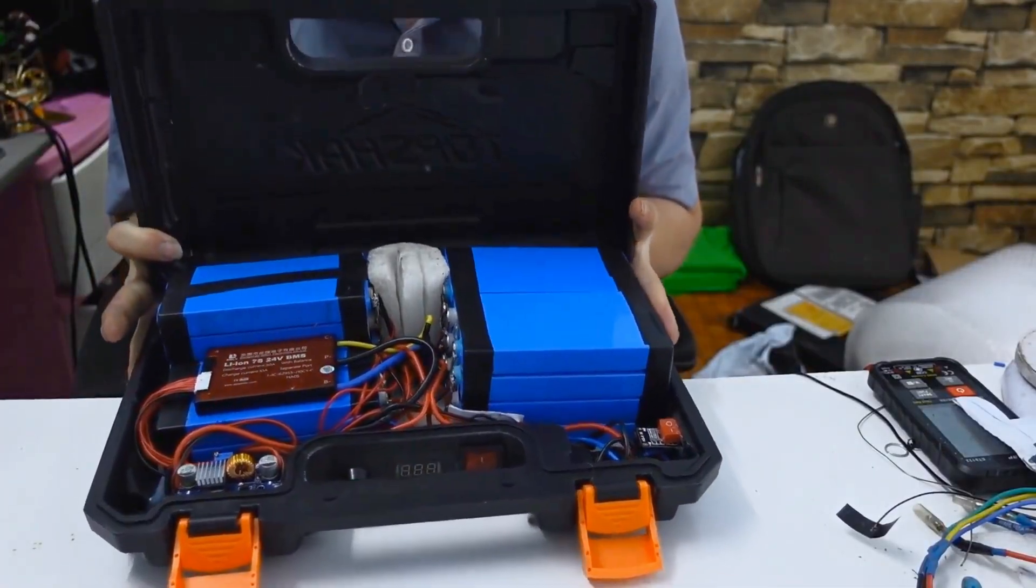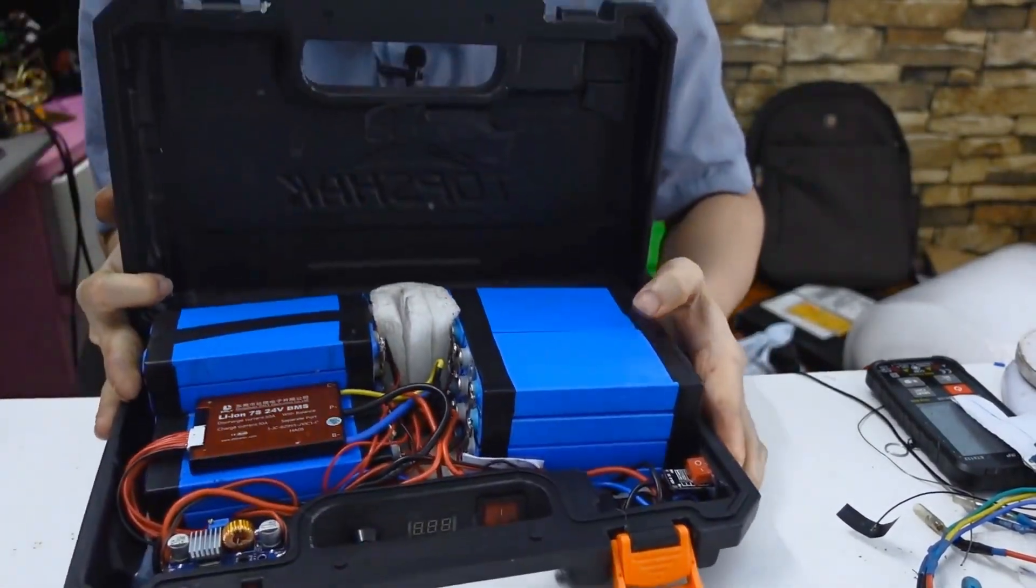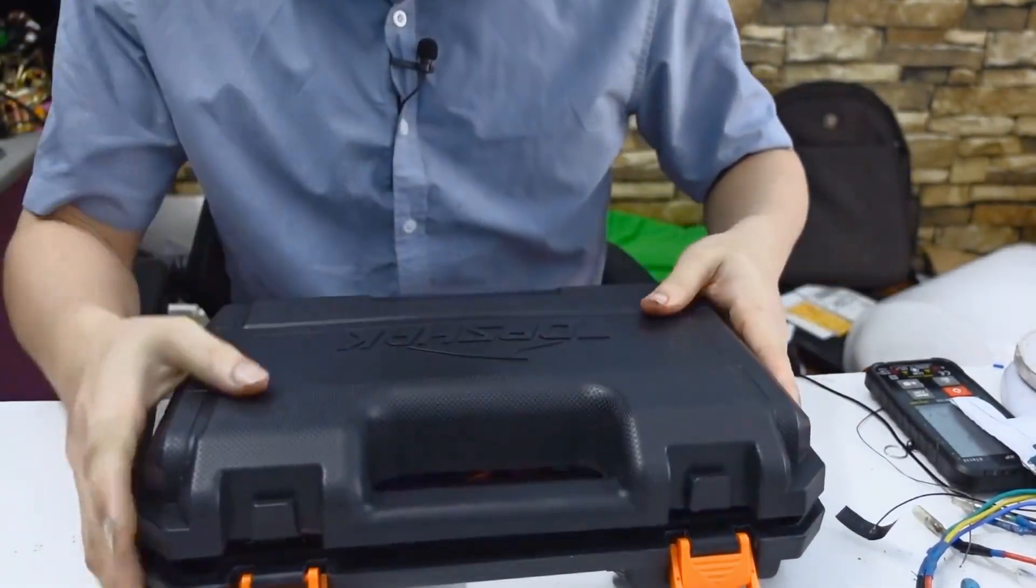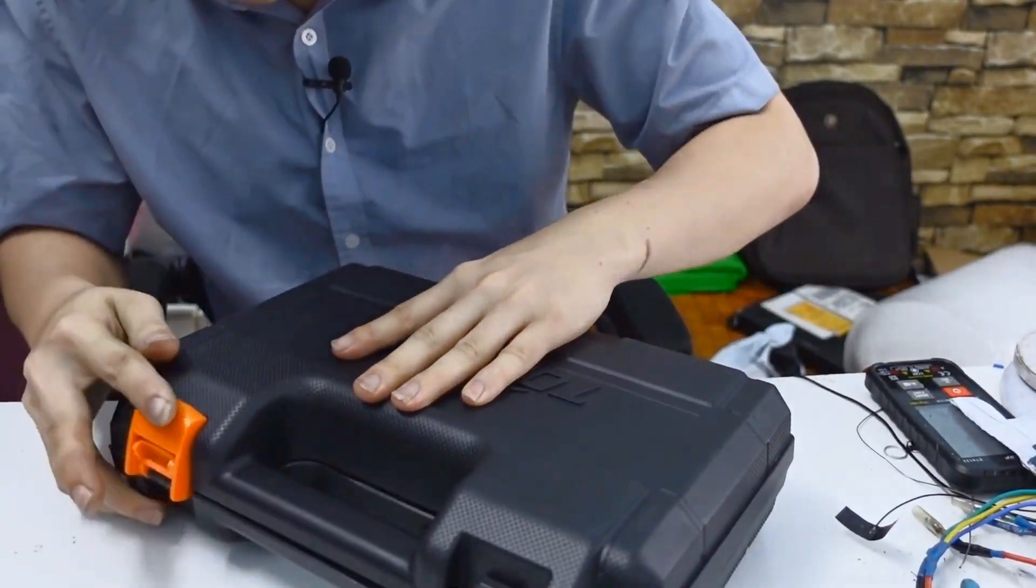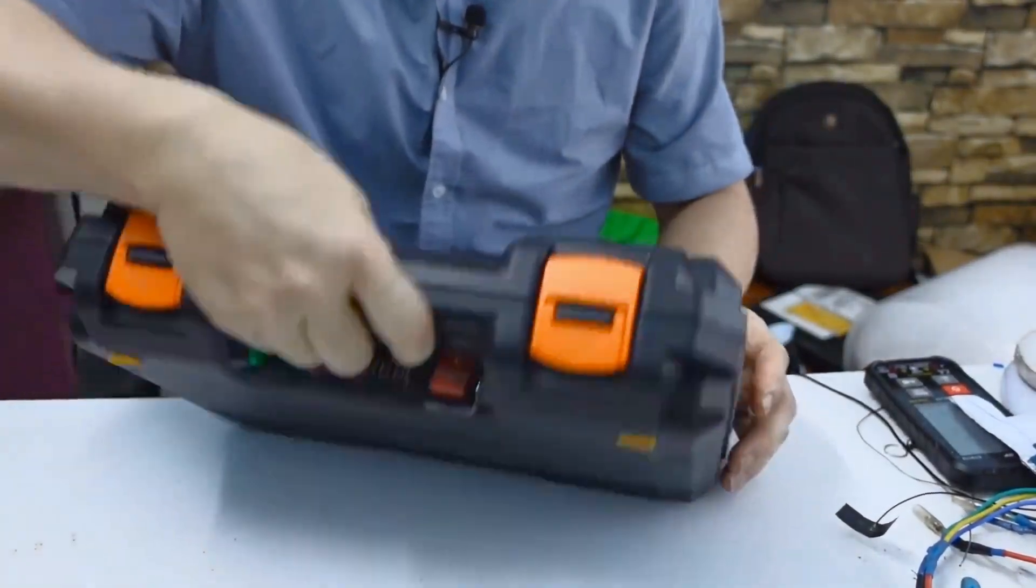So I have just shown you the inside of a battery pack that I designed, and now I will close it. It looks like a suitcase with many uses, not only for electric vehicles but also for many other devices. It is a versatile and portable energy storage device.